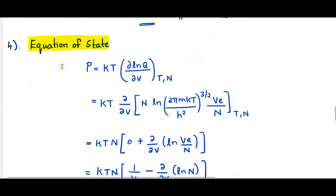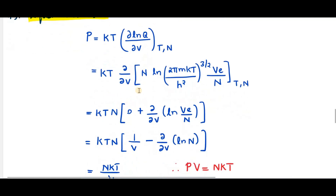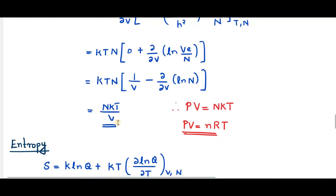Next is the equation of state. We know that for an ideal gas PV = NRT. Now let us derive it in terms of partition function. The expression for pressure is P = KT × (∂ log Q / ∂V) at constant T and N. Substituting log Q and differentiating with respect to volume, we get P = NKT/V, and therefore PV = NKT = NRT for N moles of ideal gas. That is the equation of state PV = NRT.